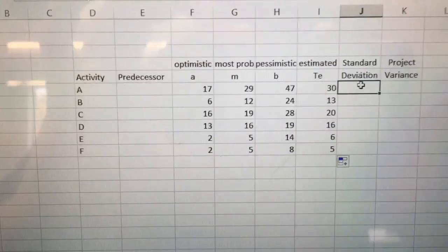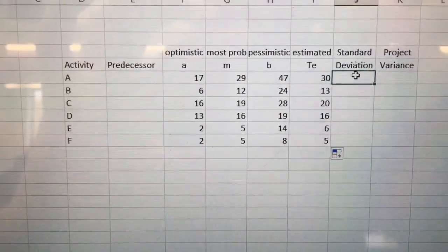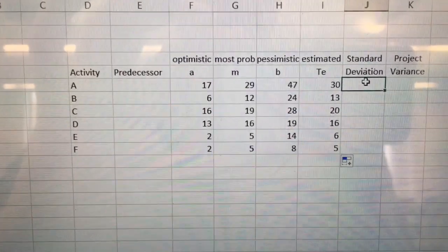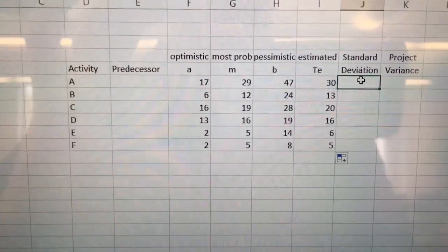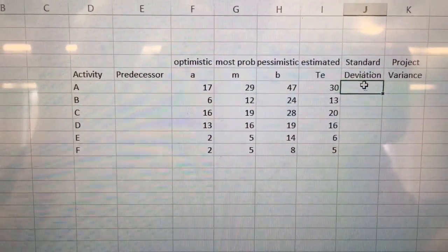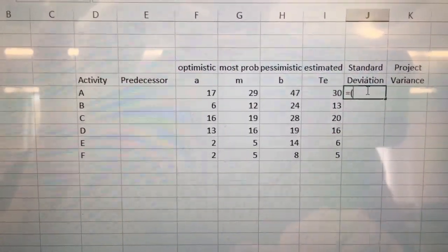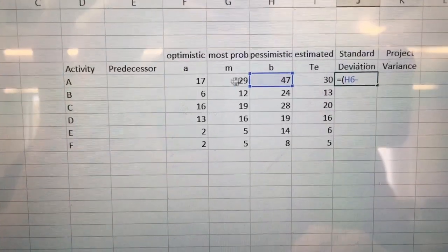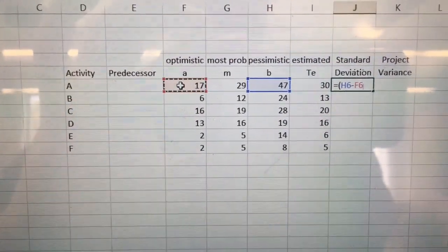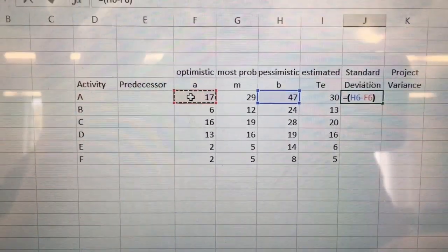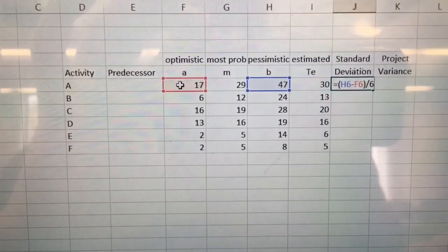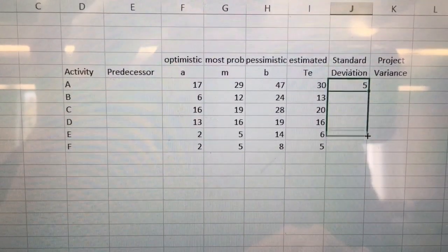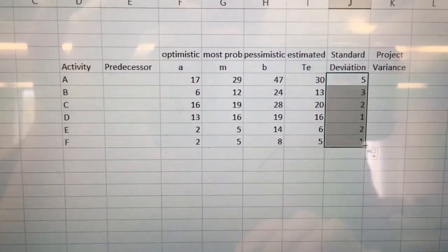Who recalls what our formula for standard deviation is? That's correct, simply our pessimistic minus our optimistic divided by 6. So once again I'm going to do an equal and I'm going to open up a parenthesis. I'm going to put in my pessimistic, subtract my optimistic, close out that parenthesis, and divide that whole thing by 6. Once I do that I can take that number, drag it all the way down, or that formula, and drag it all the way down.